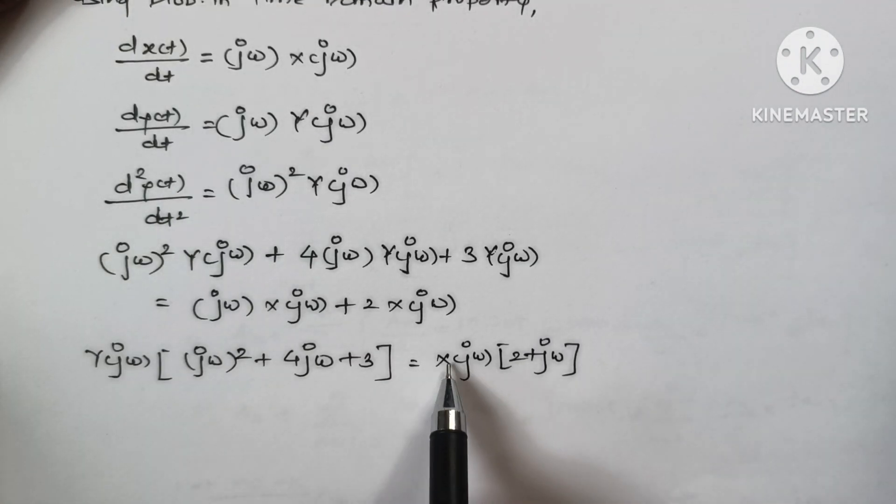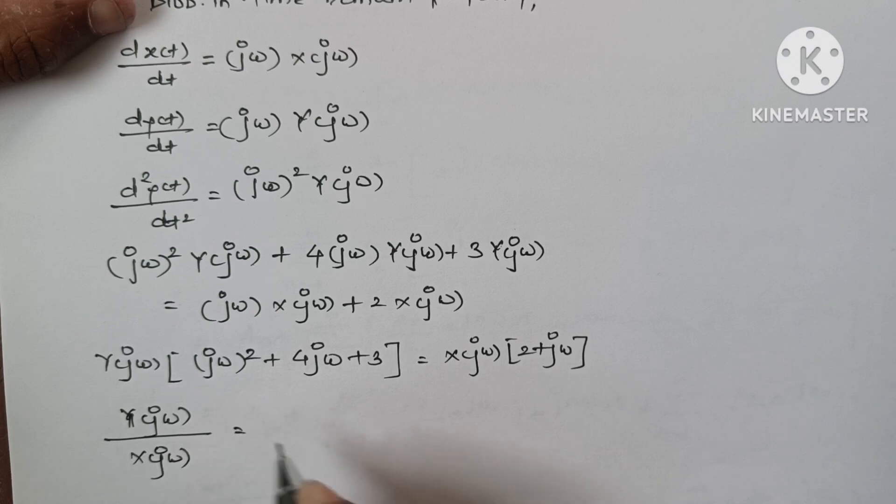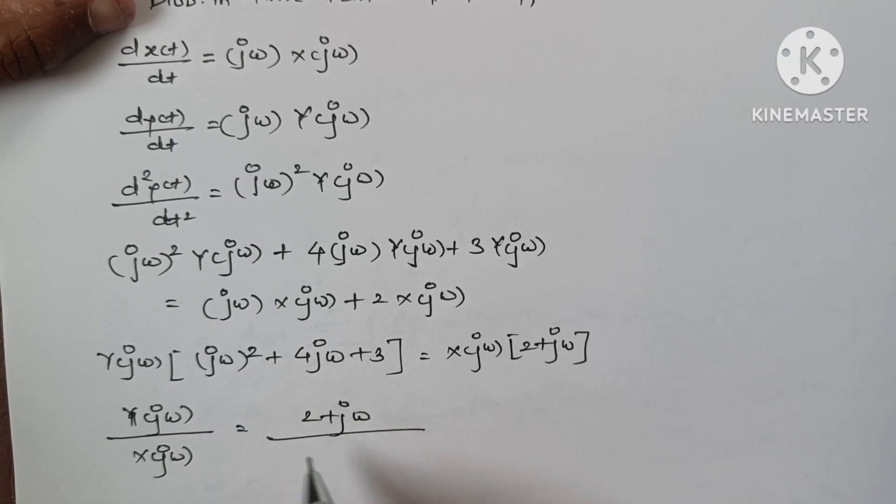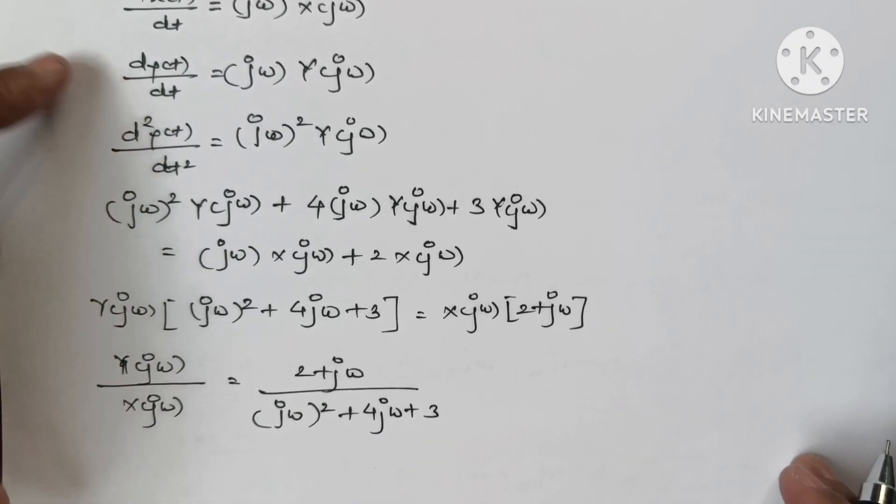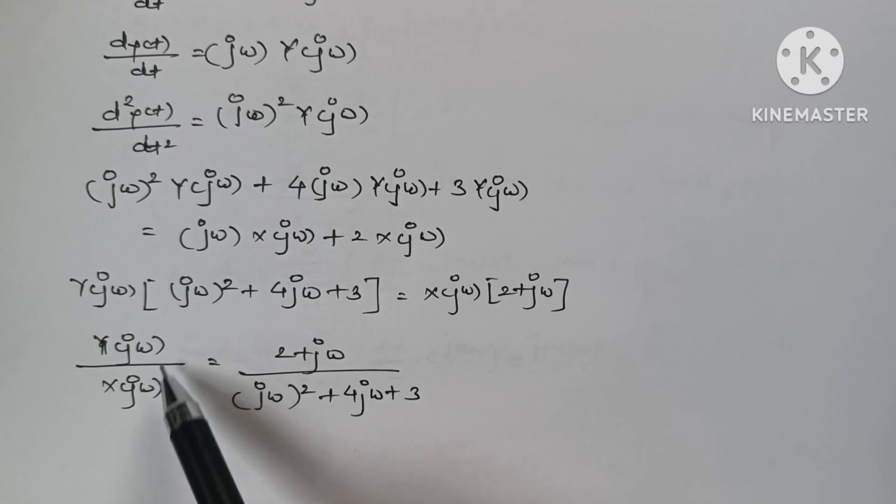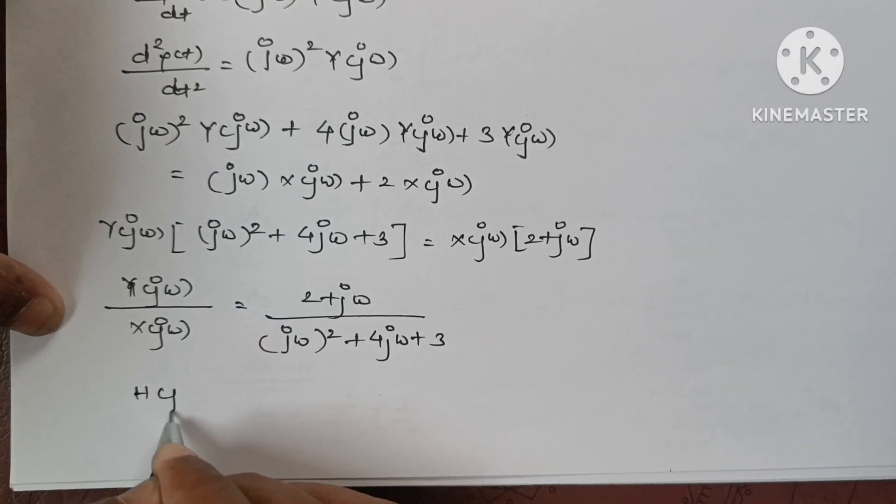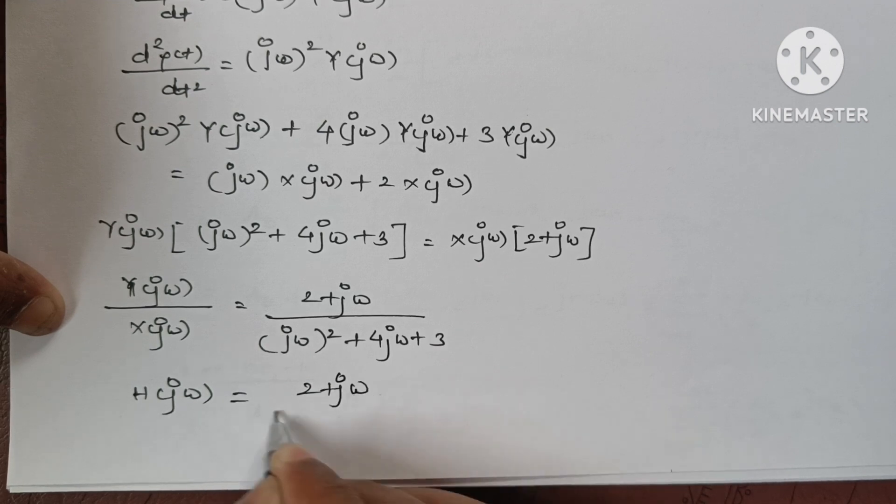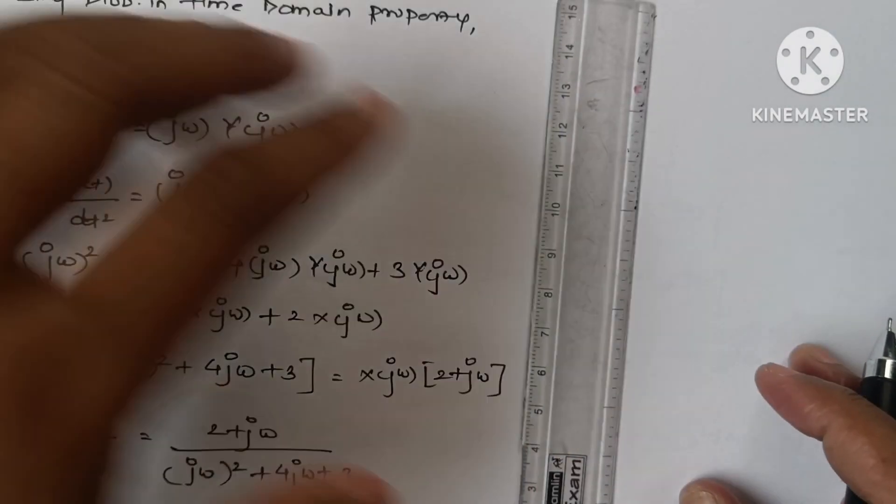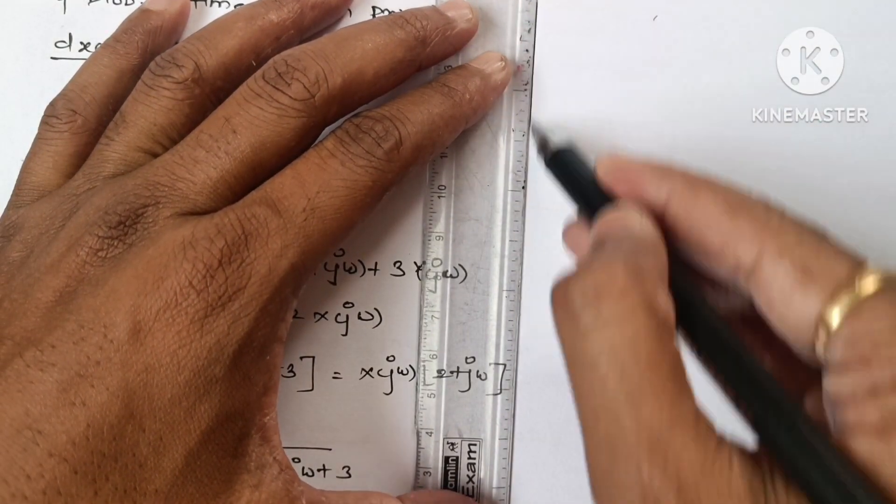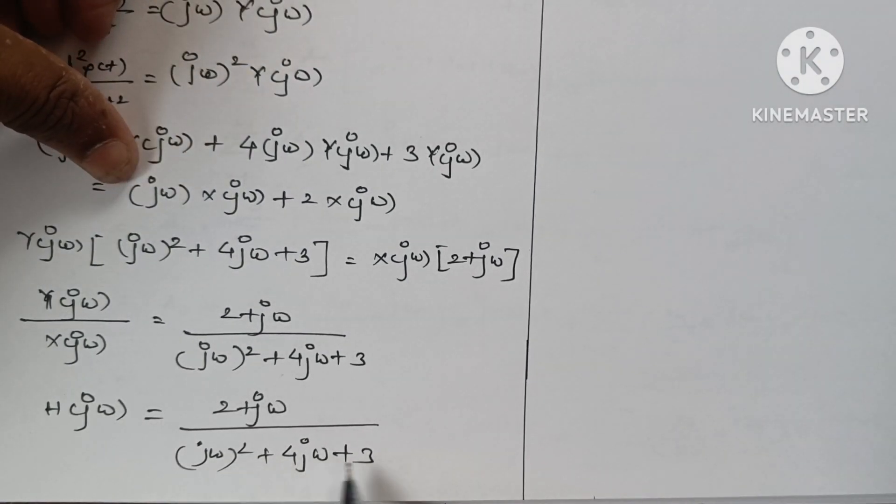So y(jω)/x(jω) equals (2 + jω)/[(jω)² + 4jω + 3]. Now we know that if we divide output by input, we will get impulse response.